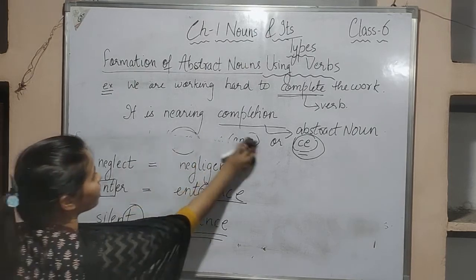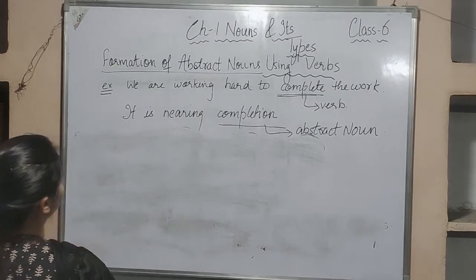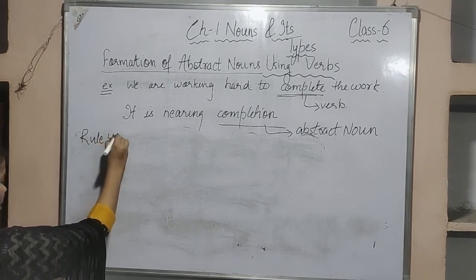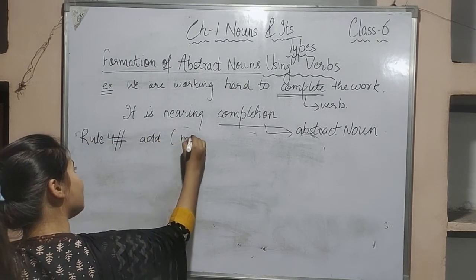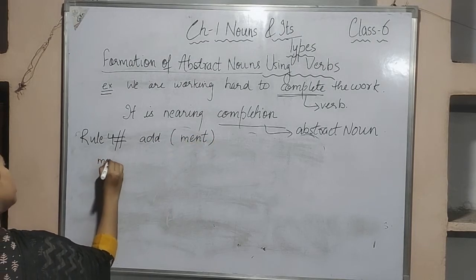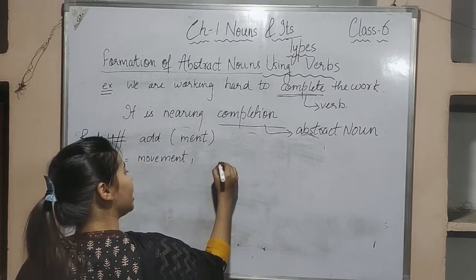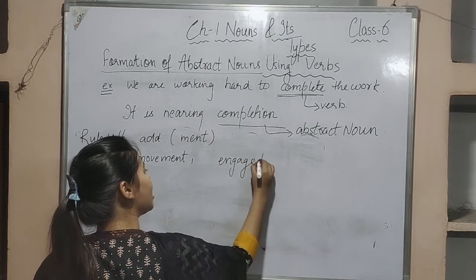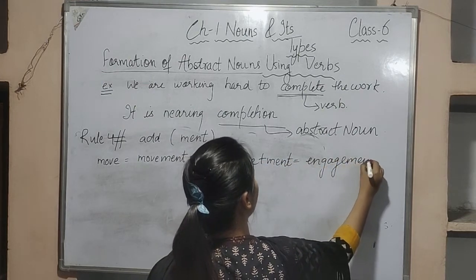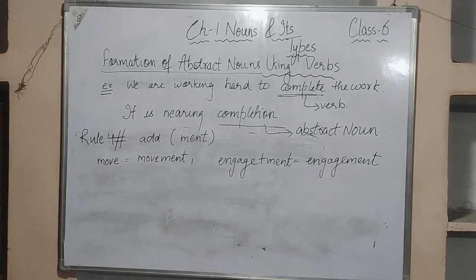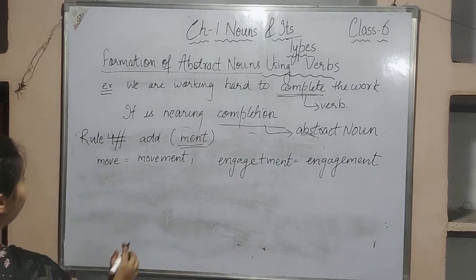Rule number four for verb-based abstract nouns: simply add -ment. For example, 'move' is a verb — move + ment = 'movement.' 'Engage' is a verb — engage + ment = 'engagement.' Rule four is very easy — for whatever verbs are given, just add -ment. Other examples include 'improvement' and 'government.'